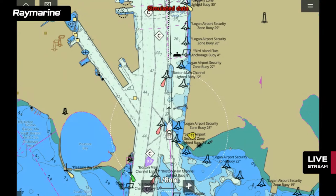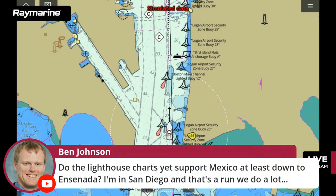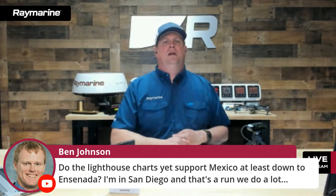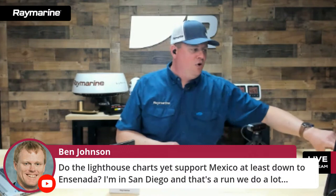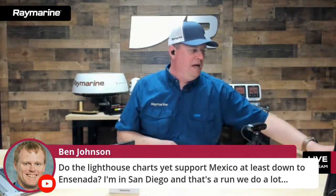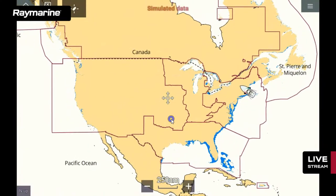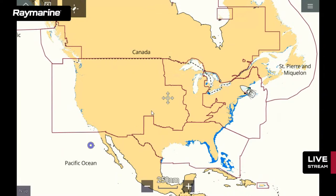Ben would like to know if Lighthouse Charts support Mexico, at least down to Ensenada — he's in San Diego. The Lighthouse Charts North America chipset covers Canada, the United States, and the Western Bahamas, but it does not yet go down to Mexico. Watch for that in a future release. It's not only coastal charts — it includes inland charts as well, covering major lakes, rivers, and estuaries that are boatable.